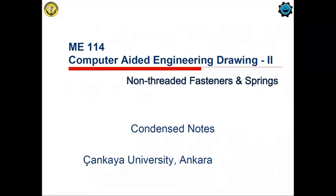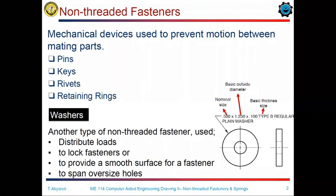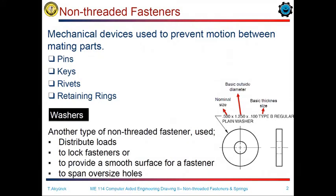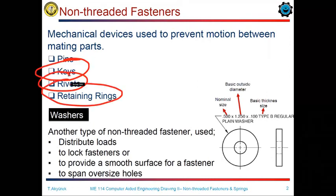In this video we will discuss the non-threaded fasteners and springs. When we are talking about non-threaded fasteners, we can consider four important machine elements: these are pins, rivets, keys, and retaining rings.